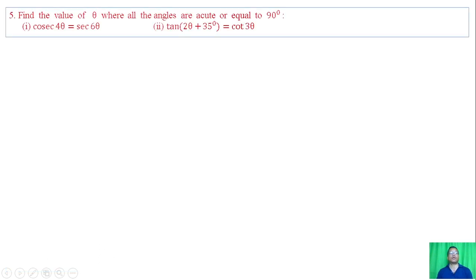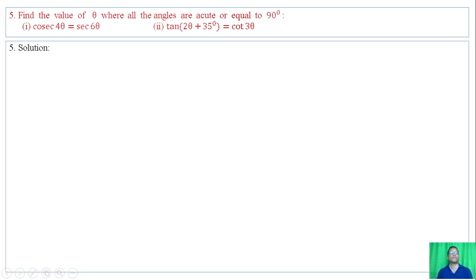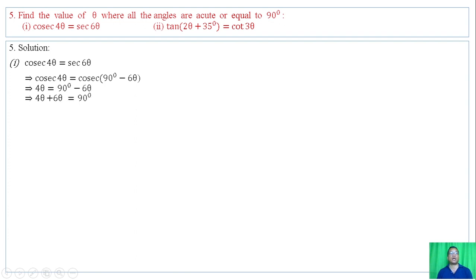Question number 5: find the value of theta, where all the angles are acute or equal to 90 degrees. Using co-function identity: cosec of 4theta equals sec of 6theta, which equals cosec of (90 minus 6theta). Equating: 4theta equals 90 minus 6theta, giving 10theta equals 90 degrees, so theta equals 9 degrees.